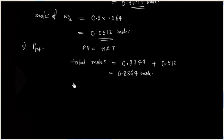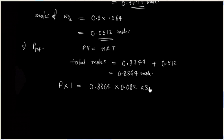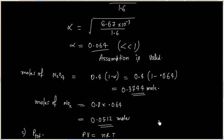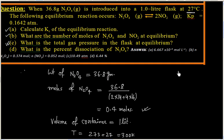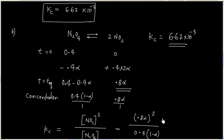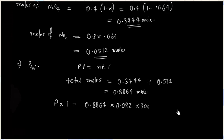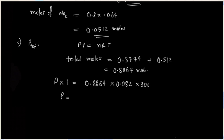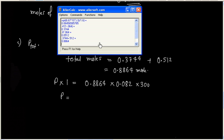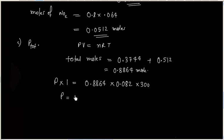We need to calculate pressure, with volume given as 1 liter, total moles known, R as the gas constant, and temperature as 300 Kelvin as given in the problem. From PV equals nRT, we can calculate total pressure, which comes out to 21.8 atmospheric pressure.